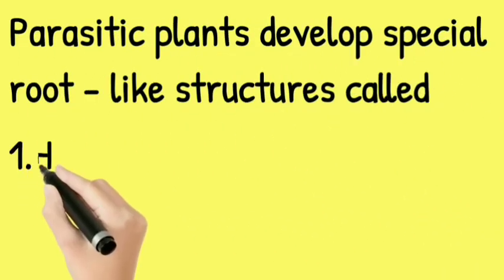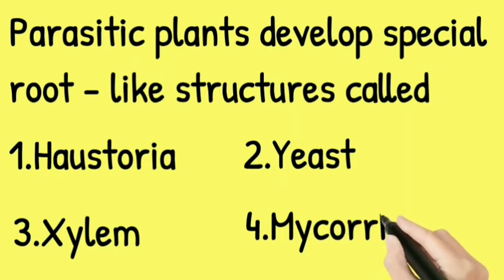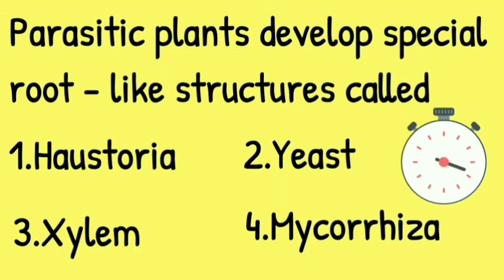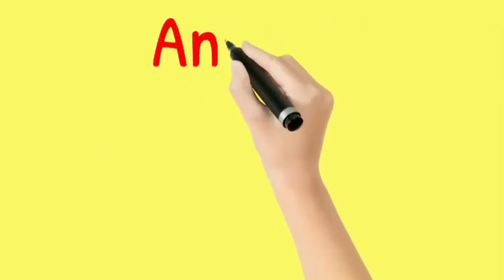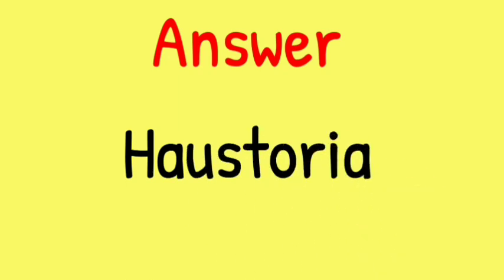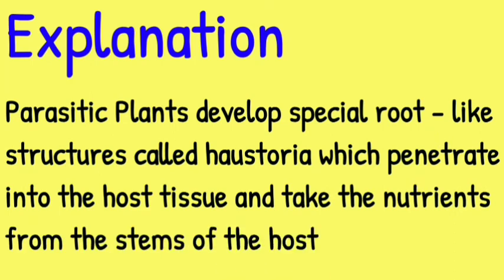Parasitic plants develop some special root-like structures called — Explanation: Parasitic plants develop some special root-like structures called haustoria, which penetrate into the host tissue and take the nutrients from the stems of the host.